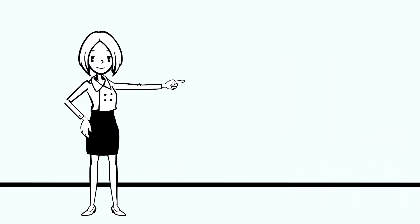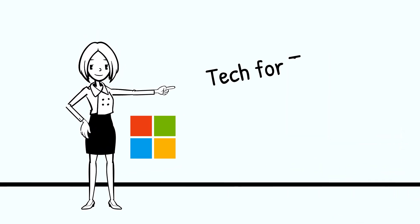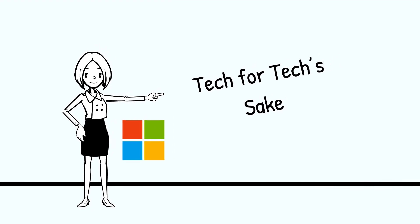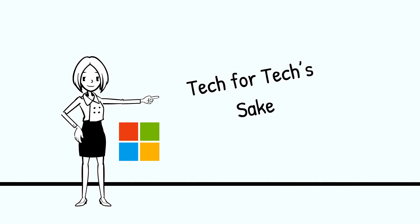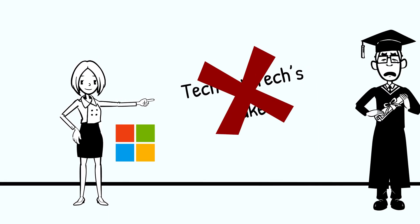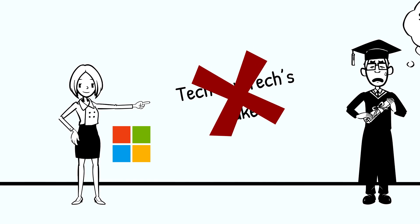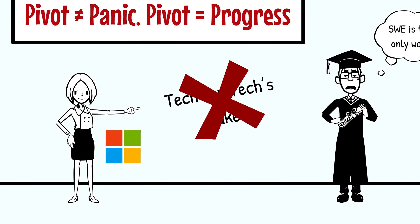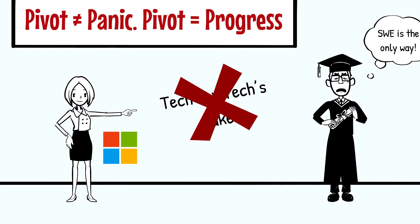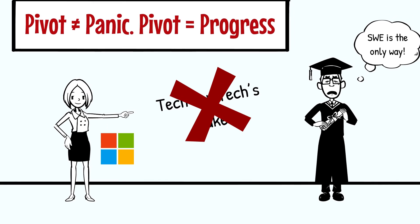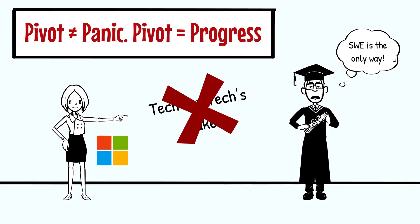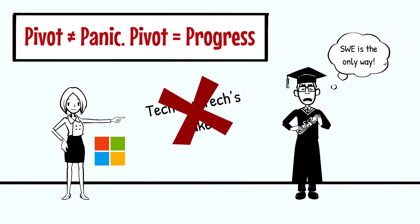Even big names are shifting. Mira Lane, a former AI exec at Microsoft, just pivoted her entire career to focus on human-centered AI because tech without purpose is noise. Think about that. A top exec is rewiring her career, and yet many CS grads are afraid to switch tracks. But that's where the opportunity lies. Pivoting isn't failure, it's survival. And in this game, survivors are the ones who evolve.